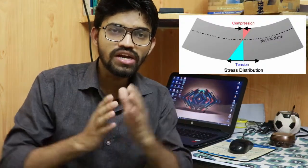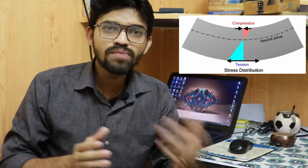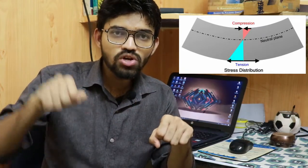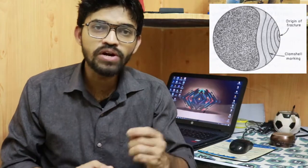Fatigue occurs due to repetitive or cyclic forces. You move the rod repetitively after a certain time period, so repetitive forces are acting on it. When you bend the rod upward, the outer portion of the cross-section undergoes tension while the inner portion undergoes compression. This process is carried out over a period of time, so tension and compression cycle continuously over the cross-sectional area of the rod.